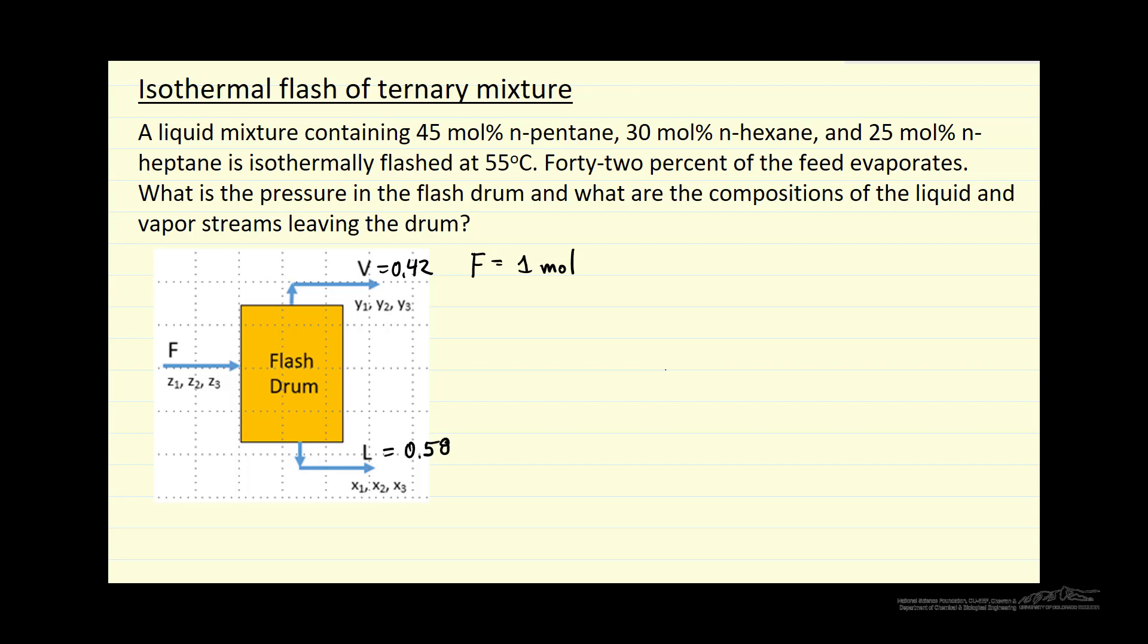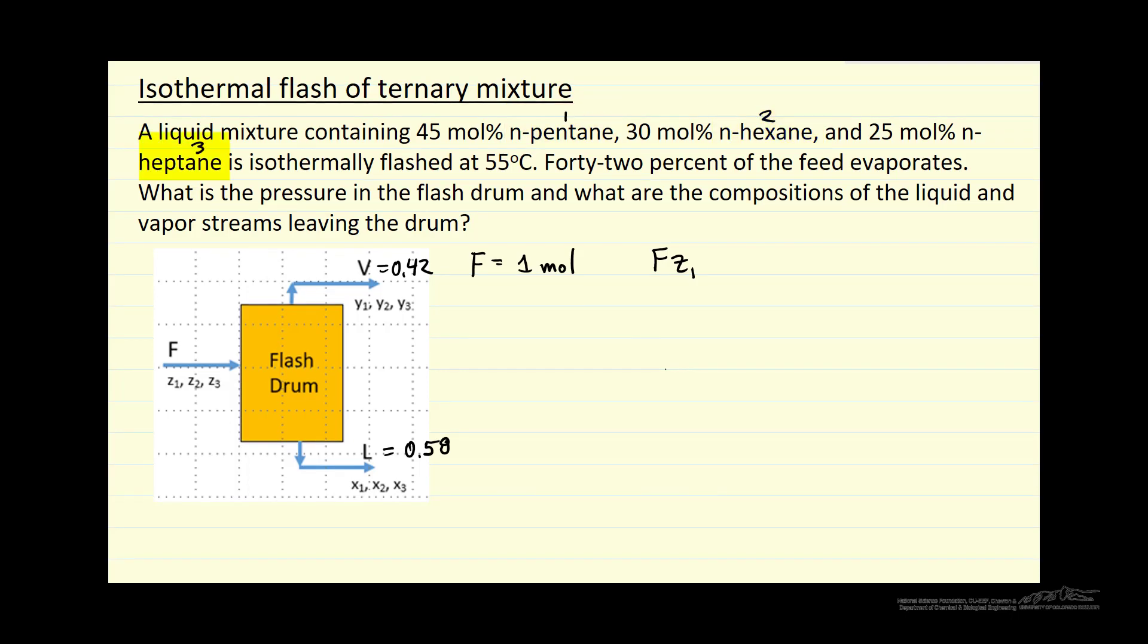So first we'll write mass balances, namely that the feed, and we'll write this for say component 1, where this is component 1, hexane is 2, and then heptane is component 3. This is equal to the liquid flow rate, or amount, times X1 plus the vapor times Y1.